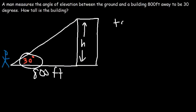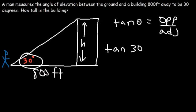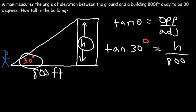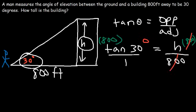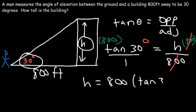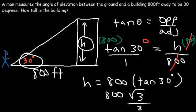Tangent theta equals opposite over adjacent. So tangent 30 equals h divided by 800. Multiplying both sides by 800, h equals 800 times tangent of 30 degrees. Tangent 30 is root 3 divided by 3, so the exact height of the building is 800 root 3 divided by 3.